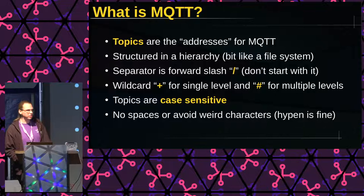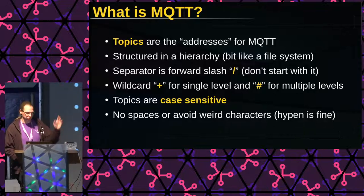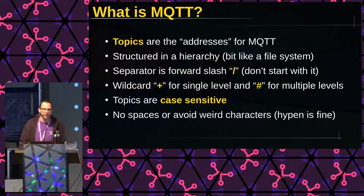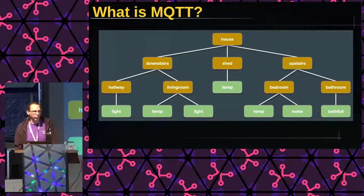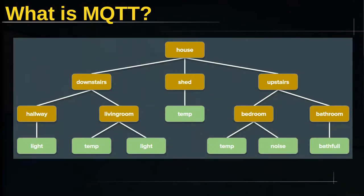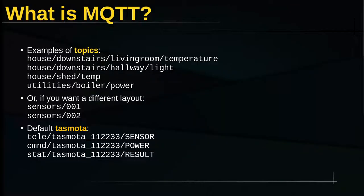Please don't put spaces in your topic names — that would be annoying — and no weird characters. Just use common ASCII and you'll be fine. You could build a ginormous hierarchy for your house, or you could make it very simple and just number sensors one through three. Later on we'll talk about Tasmota, and there we'll see Tasmota already provides a default way of organizing topics.